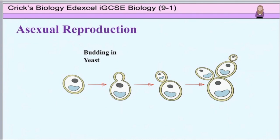Yeast can also reproduce rapidly by a type of asexual reproduction called budding. Here small cells form on the side of the original parental cell and then they grow and split off.